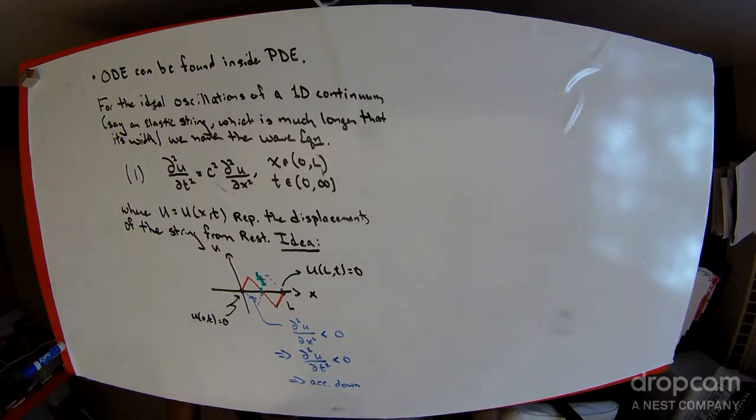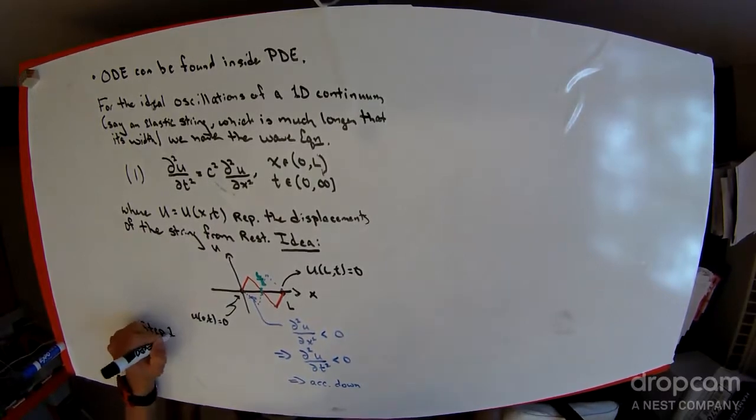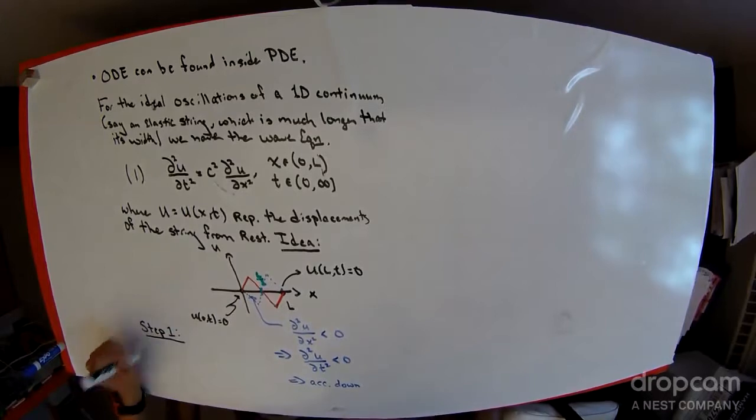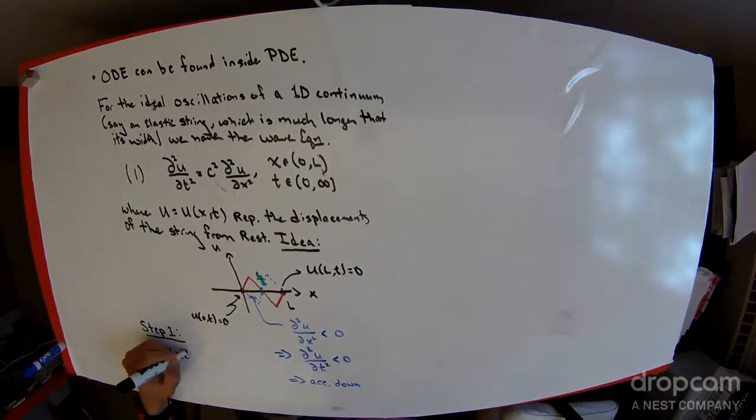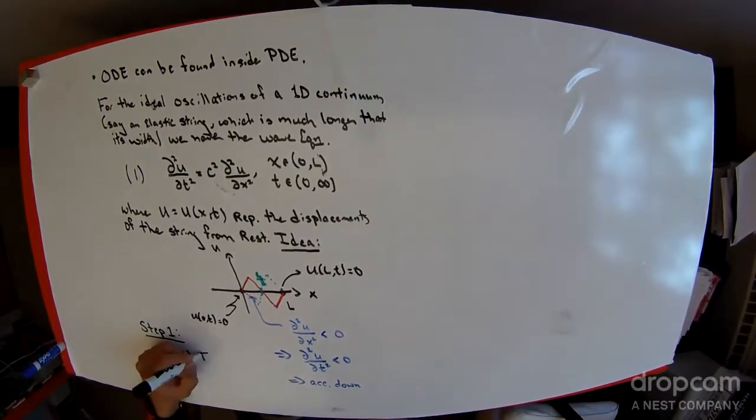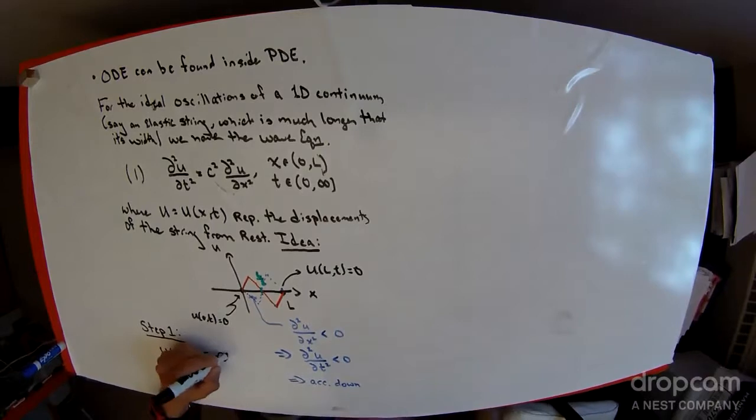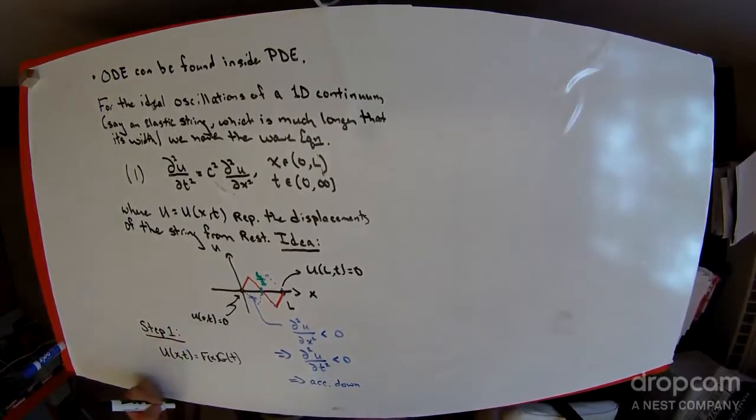So you might ask the question, what does this have to do with ordinary differential equations? To see the connection to ODEs, the first step is called separation of variables for partial differential equations. The whole idea is that u(x,t) equals f(x) times g(t).